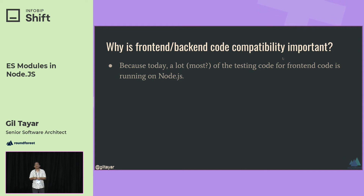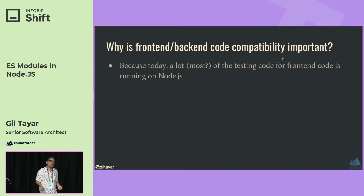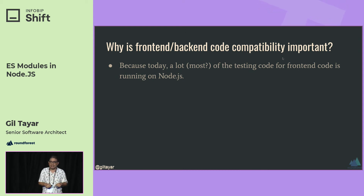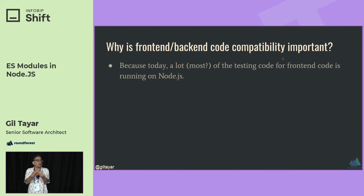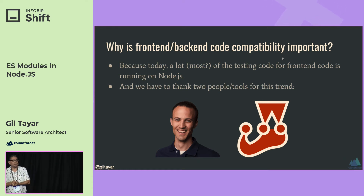Why is front-end/back-end compatibility important? The answer is testing. When you're using React Testing Library or Jest to test your front-end code, where is the code running? Not in the browser — it's running in Node.js. Jest does a lot of magic to make it appear as if it's running in a browser. So a lot of front-end code runs in Node.js, and we want to bridge those two worlds. We have to thank Jest for making that popular, and Kent C. Dodds, who you heard about in the keynote.